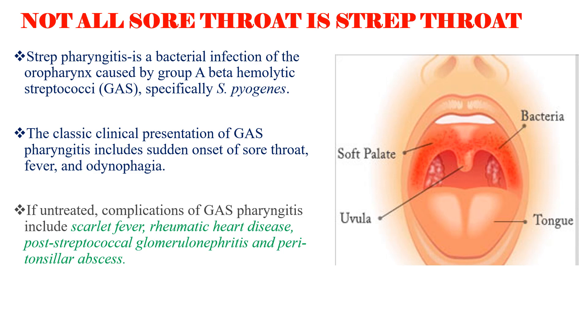If untreated, complications of group A streptococcal pharyngitis include scarlet fever, rheumatic heart disease, post-streptococcal glomerulonephritis, and peritonsillar abscess.